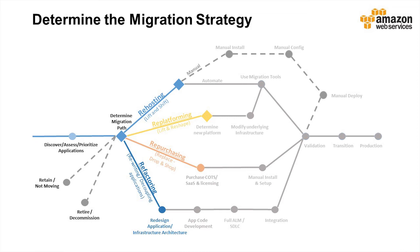The four main migration strategies are: rehost, often referred to as lift and shift, typically the simplest — we just clone the server to the cloud with minimal changes. Replatform, which involves a bit more work — we may substitute OS version or CPU architecture in the process. Repurchase, which is replacing on-premises workloads with equivalent managed cloud services, such as switching a CRM solution to a cloud-based SaaS CRM solution. And refactor, which is by far the most complex and typically involves changing application source code to take advantage of cloud services.